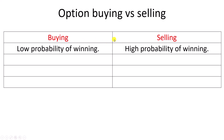The first thing about option buying and selling is that option buying has a low probability of winning, whereas option selling has a high probability of winning. This is the first difference between option buying and selling.